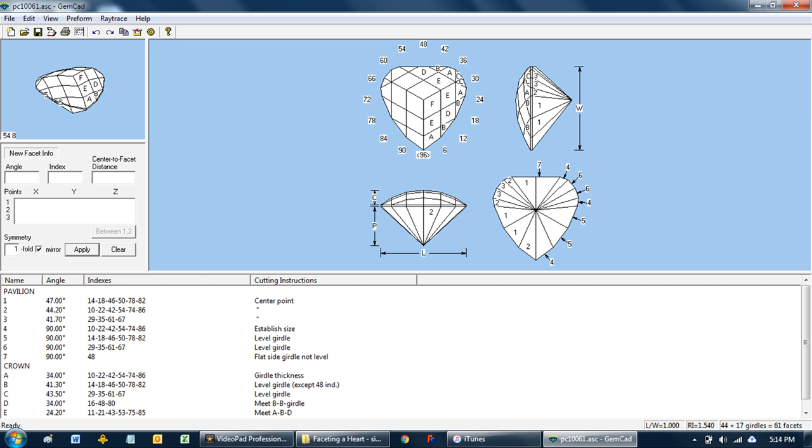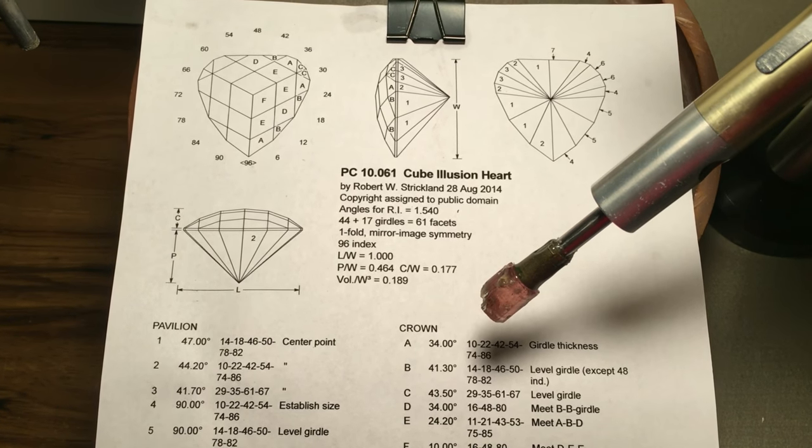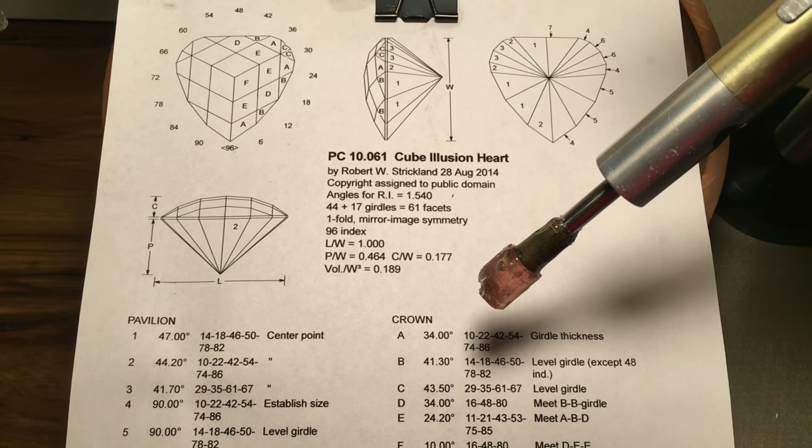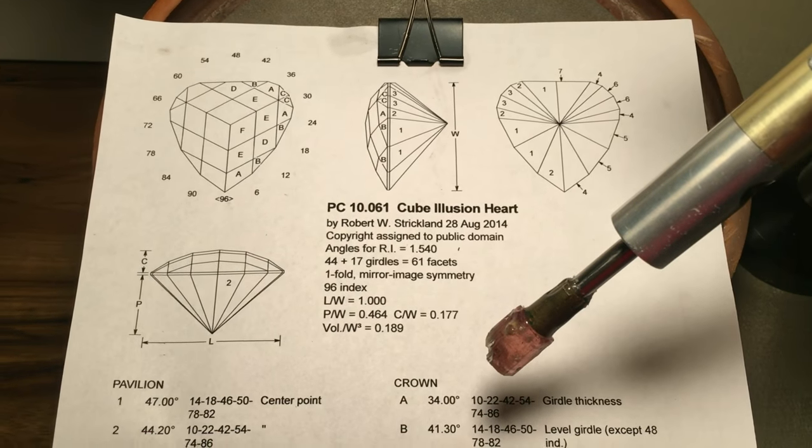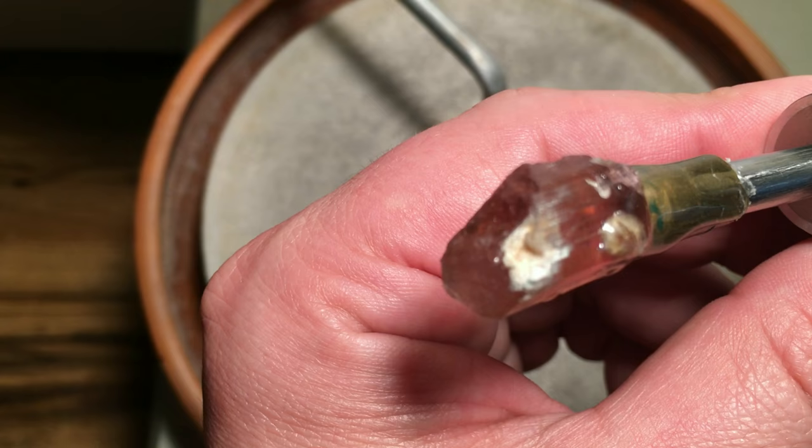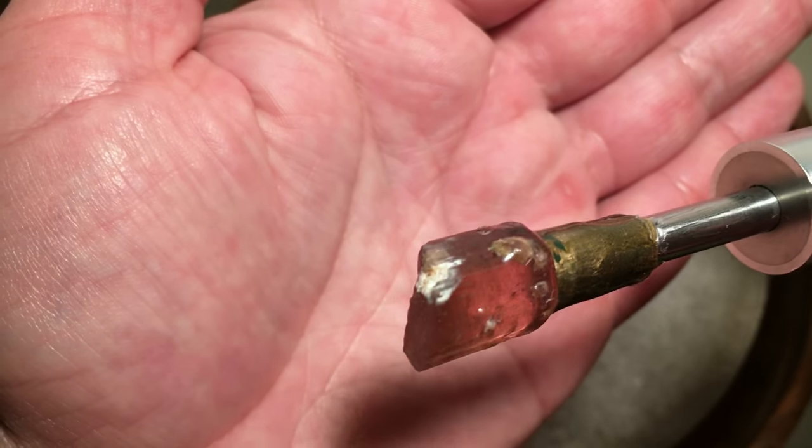I think it's something that most people should be able to follow along with this video. Let's get cracking. I've dopped up some pink tourmaline on this top with some two-part epoxy. This pattern is the cube illusion heart and it has that cube pattern in the very center of the stone on the table. I've used the clear two-part epoxy and I'd recommend letting the epoxy set up at least overnight.